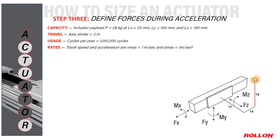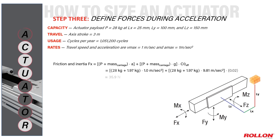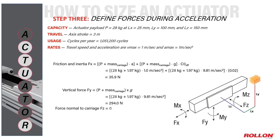Now let's work through the third step in sizing an actuator — that is, defining forces on the actuator when it's accelerating. Again, we'll employ capacity, travel, usage, and values to quantify forces and moments. The calculation for Fx is the same as before, accounting for gravity on both the payload and carriage mass, except now we also account for the effects of these two masses on the actuator during acceleration. Notice how Fx here is 35.9 newtons, Fy is 294 newtons, and Fz remains zero.